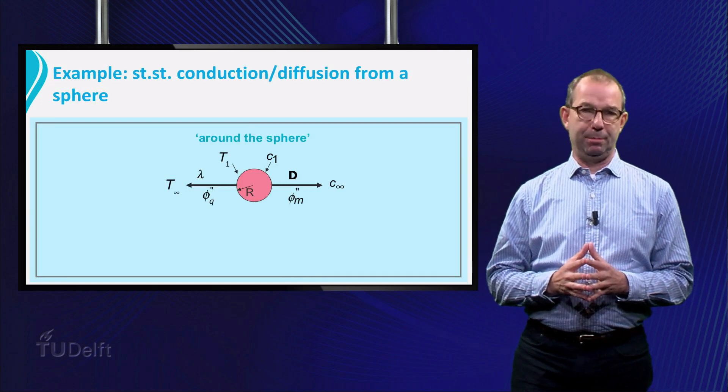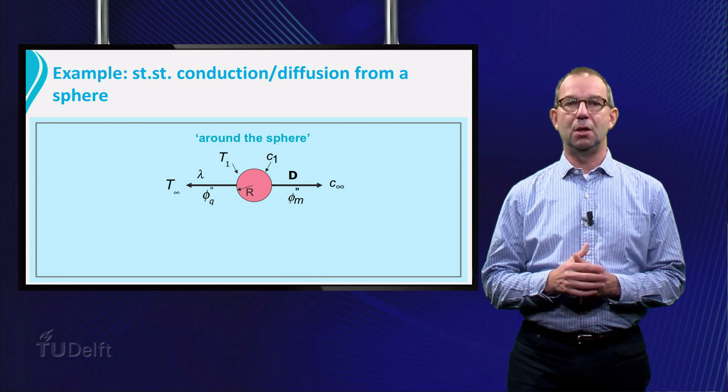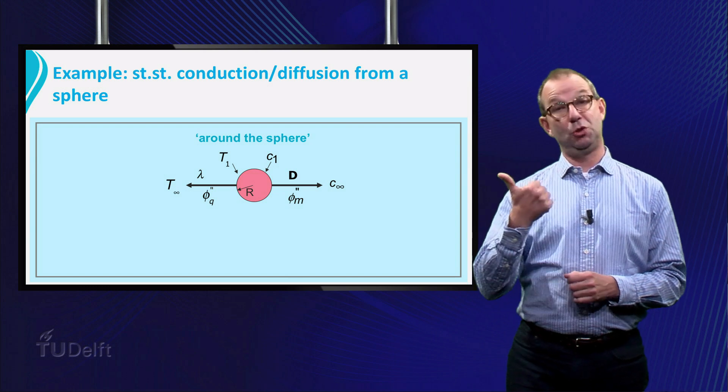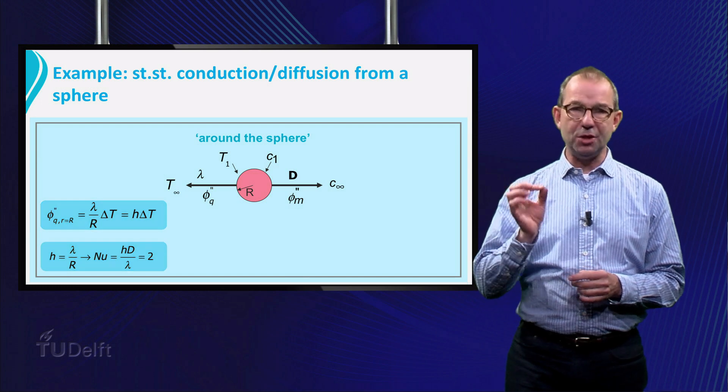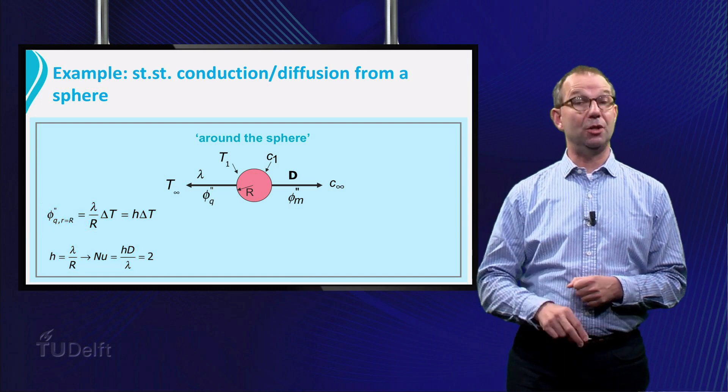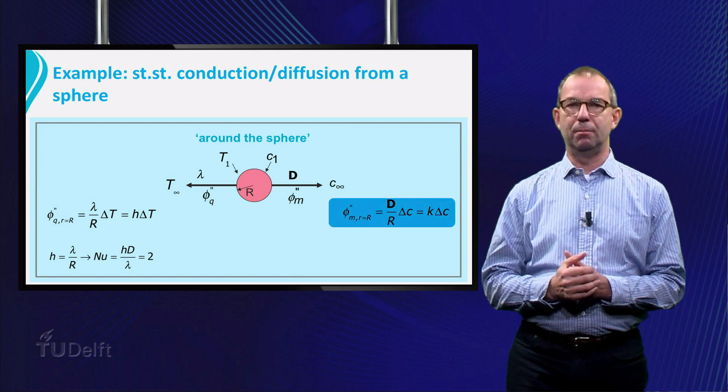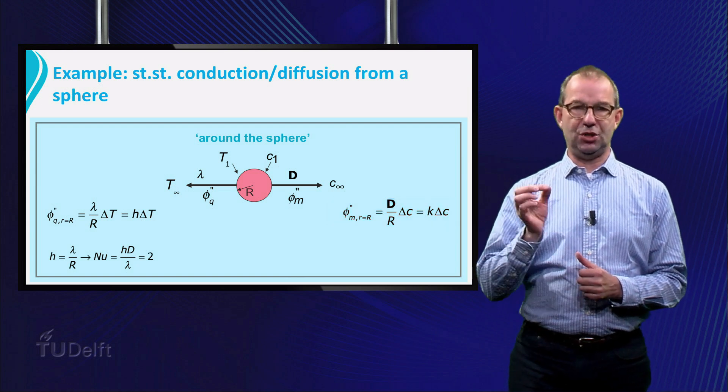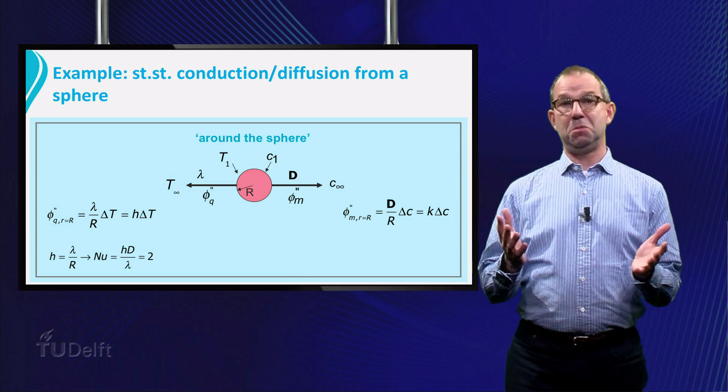Let's do a basic example. Steady state conduction of heat or mass from the surface of a sphere to infinity. For heat, we have seen that this can be casted in a simple relation. Nusselt is 2. For mass transfer, it is quite the same. All we need to do is change C for T, K for H, D for lambda, and we are done.